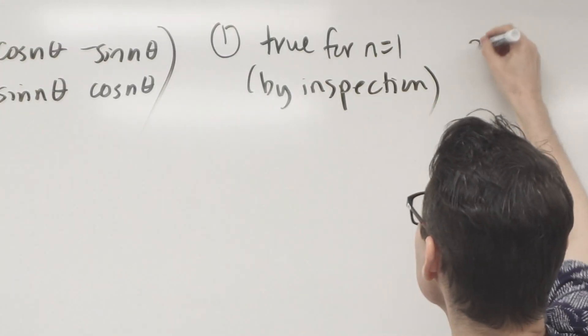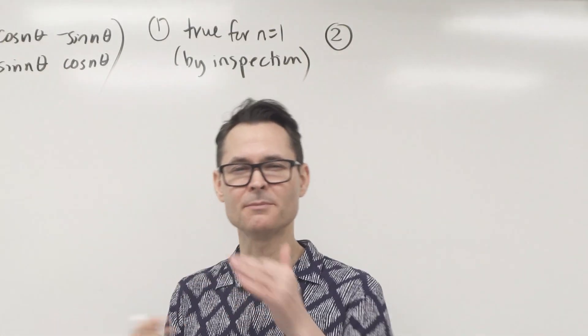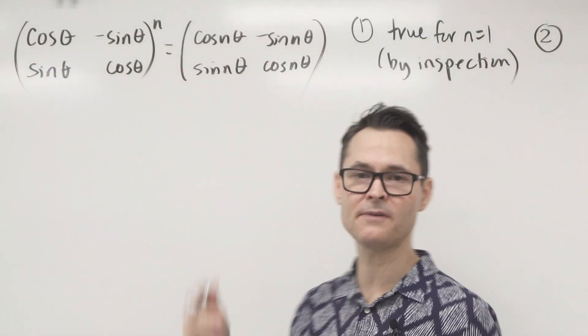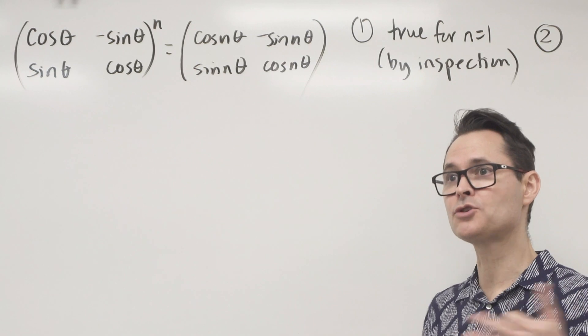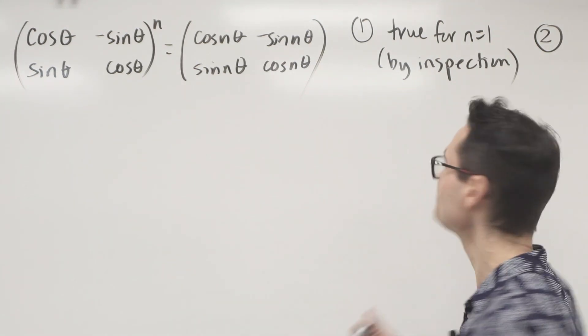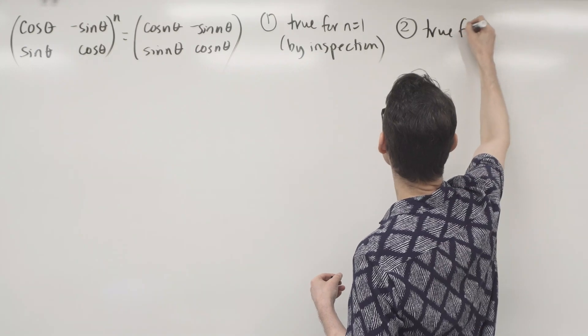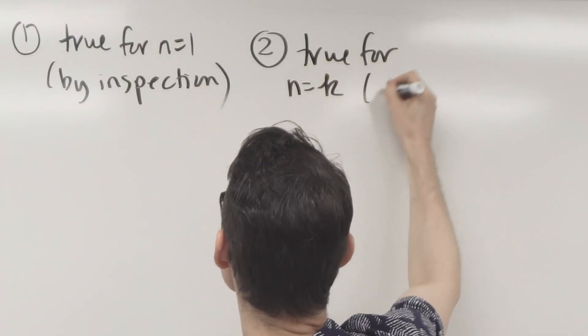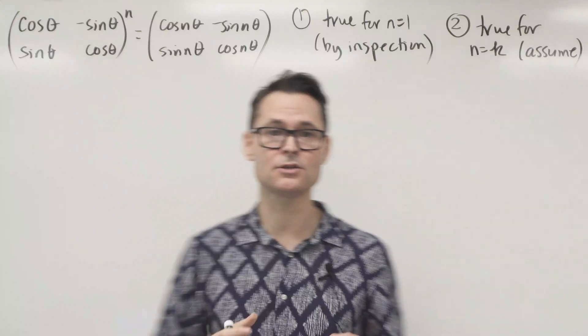The second thing that I'm going to do is make an assumption. Since I can show that this is true for some arbitrary small values of n using some matrix algebra, then I'm just going to say it's true for some arbitrary integer. So I'm going to say it's true for n equals k, and that's by assumption.